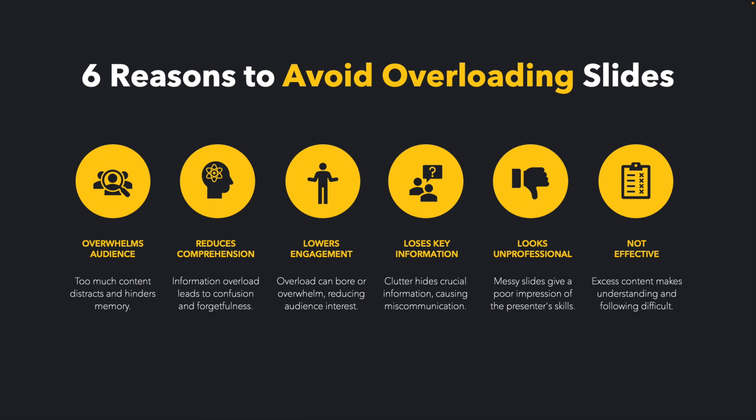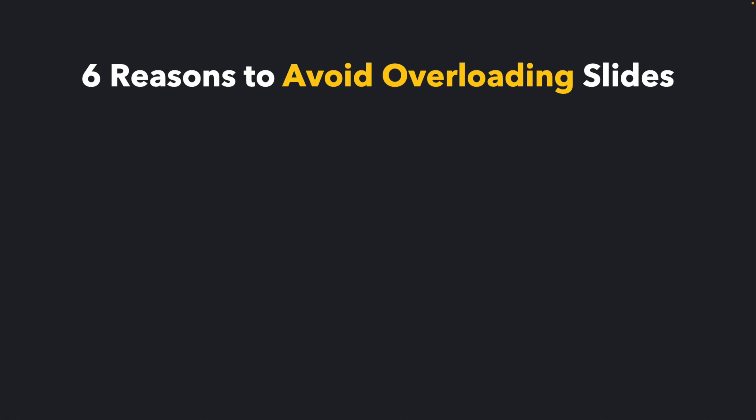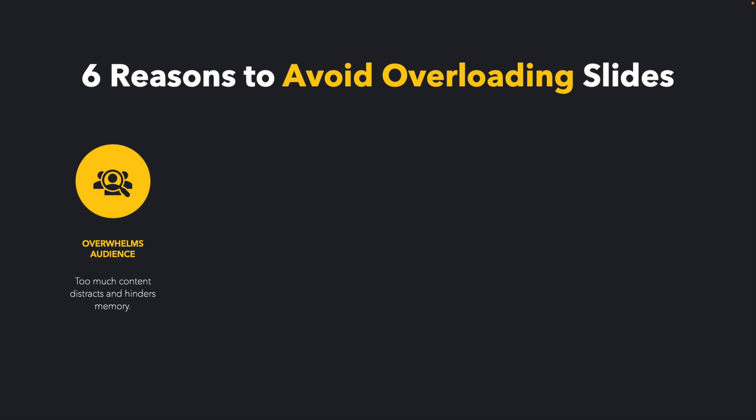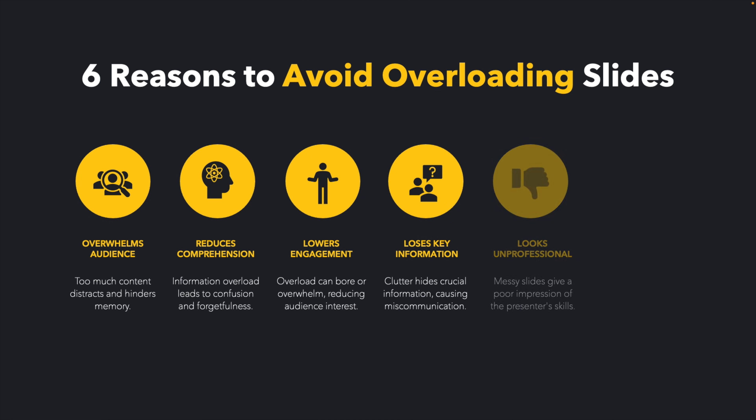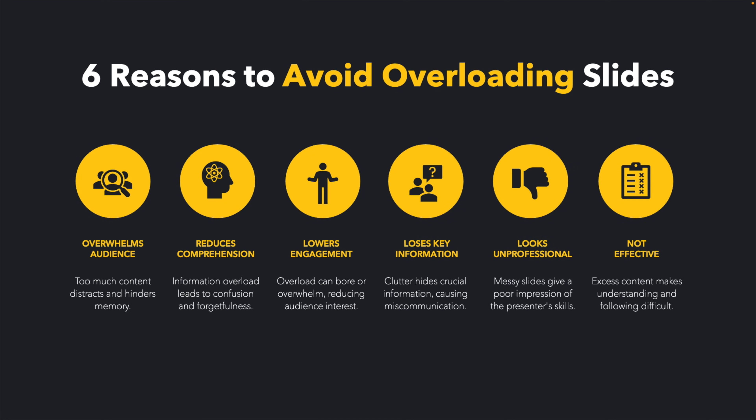As a bonus tip, I would go further and animate the slide so you're in full control as the presenter. Add the slide title first, then on each click release one bullet point as you're talking about it. Once you're done with that bullet point, add the next one — so you're really controlling what content appears and guiding the audience's attention.